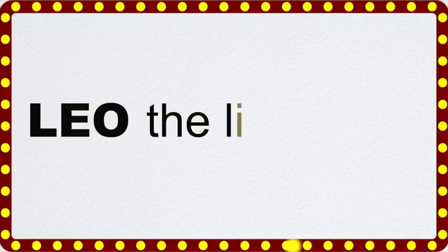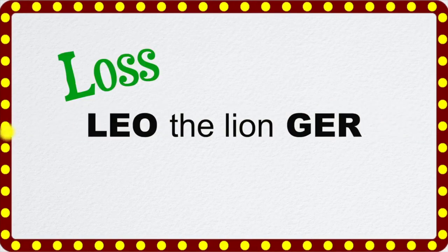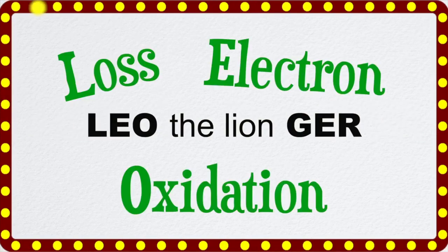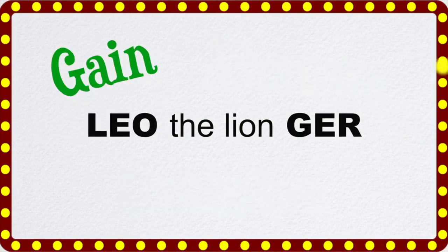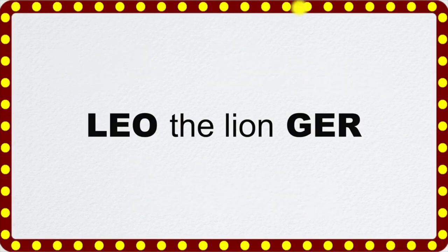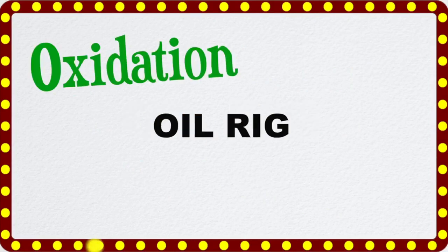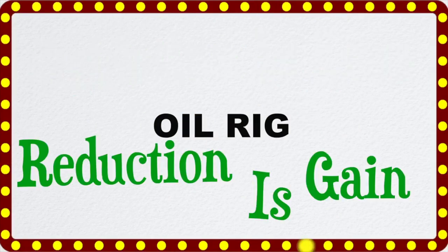Let's remember the acronym LEO the Lion GER: loss of electrons is oxidation, and gain of electrons is reduction. Or you can remember it as OIL RIG, which stands for oxidation is loss, reduction is gain — that is, loss and gain of electrons, of course.